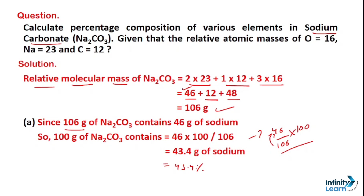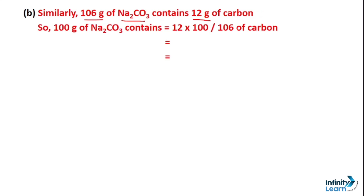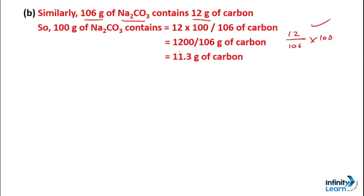Now let's move to the next element — carbon. As you know, 106 grams of sodium carbonate contains 12 grams of carbon. If we compare this for 100 grams, the value will be: 12/106 × 100. This can be solved step by step. The answer we get is 11.3 grams of carbon, which is 11.3% in percentage form.